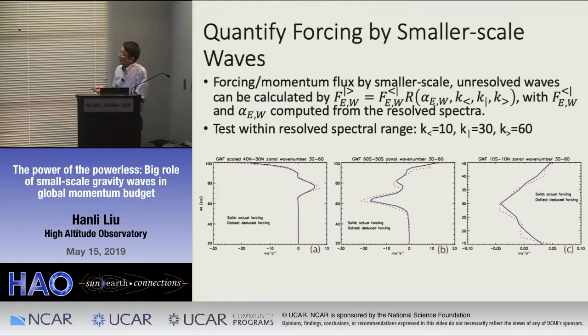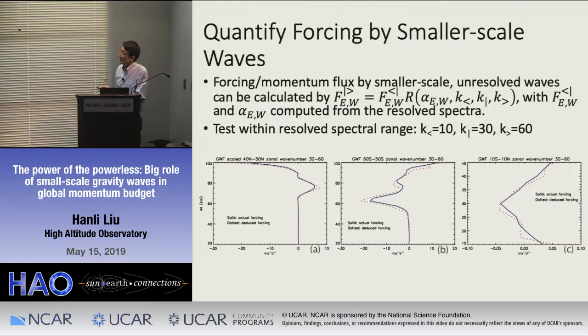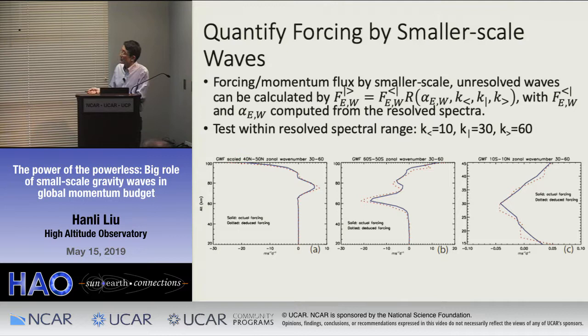We conducted a validation test: setting K_left at wave number 10 and K_middle somewhere in the middle up to wave number 60 — a range the model is still resolving — we calculate forcing in the resolved spectral range, then deduce the forcing for the unresolved part and compare with the actual resolved forcing. Picking three locations — northern hemisphere mid-latitude, southern hemisphere mid-high latitude, and equatorial region — the solid lines show actual forcing profiles and dotted lines show deduced forcing. In general they are in reasonable agreement, validating the approach.